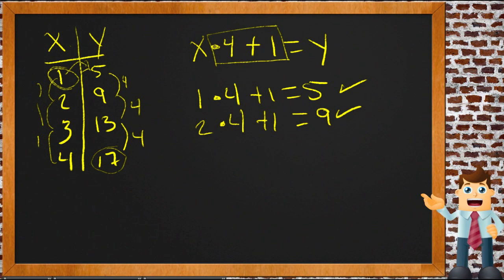To write it as a function, we just put the number in as a variable and the output also as a variable, so that then we can use this process, this multiply by 4 and add 1, with any number we want and find what number is associated with it—what number is the output when we put a specific number in to our little process here, our times 4 plus 1 process.